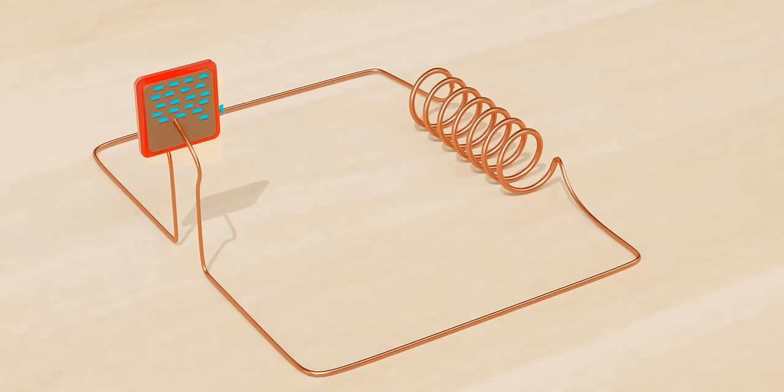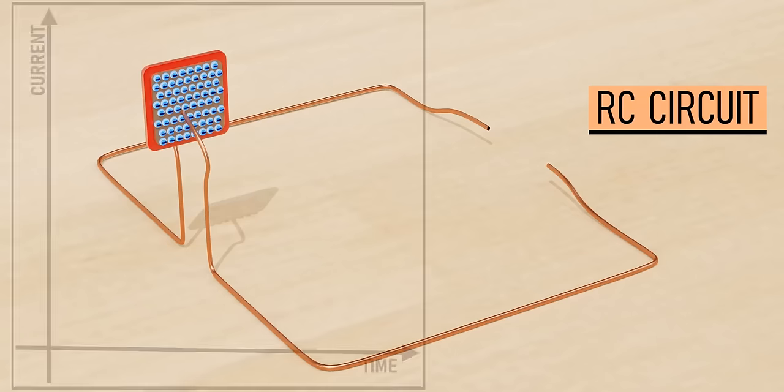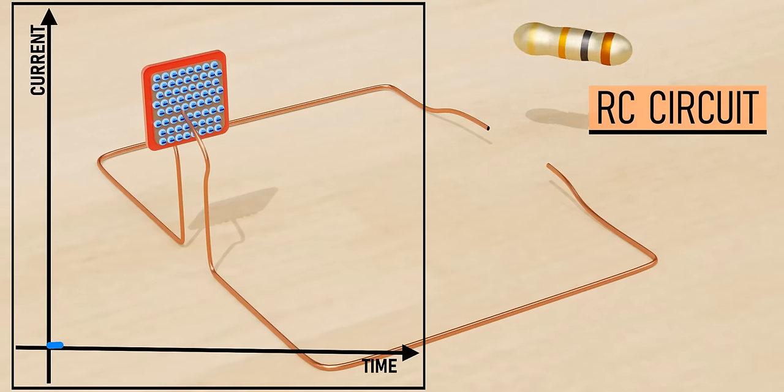Before diving into the LC circuit, we need to understand a simple circuit: a capacitor-resistor circuit. The capacitor is fully charged initially. Let's introduce a resistor into the circuit.